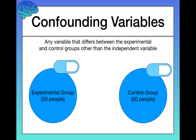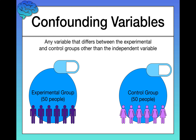Going back to the depression study: instead of randomly assigning participants, suppose you put all the men in the experimental group and all the women in the control group. This is a problem because if you observe a difference — say, depression symptoms were reduced in the experimental group — you'd have no idea if this is because of the medication or because of gender, which in this case is a confounding variable. We already know from other studies that women tend to show higher rates of depression. This is why it's important to make everything equal between the two groups other than that key manipulation of interest.